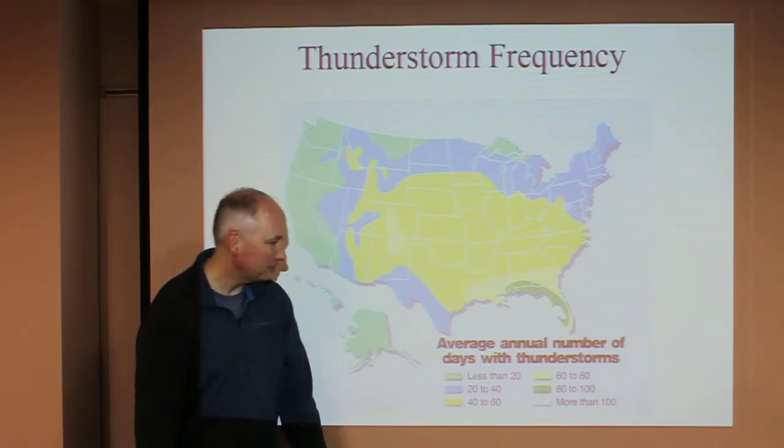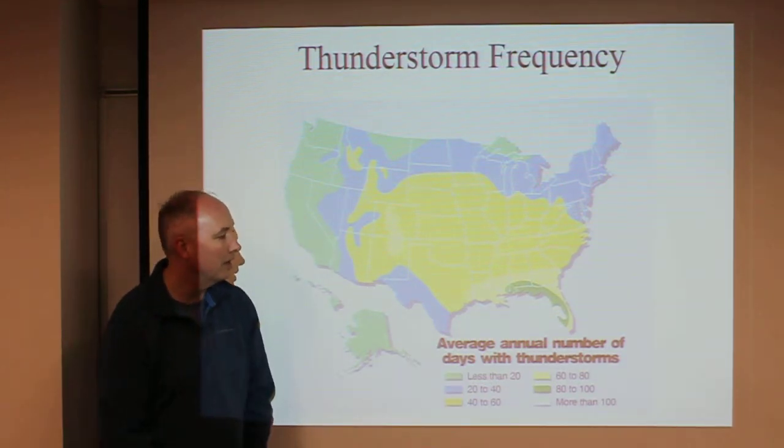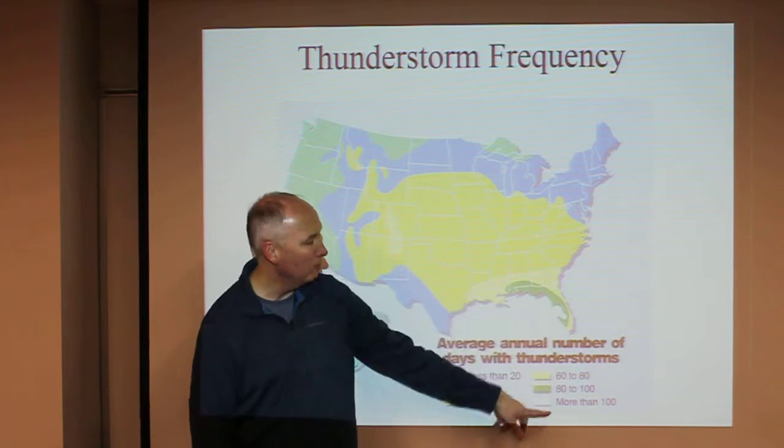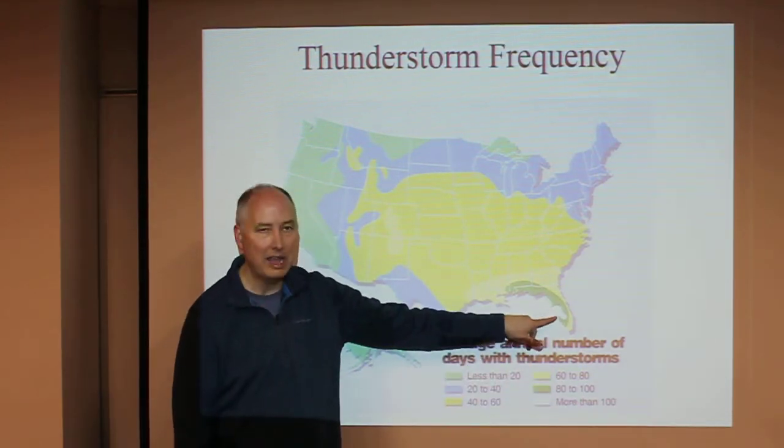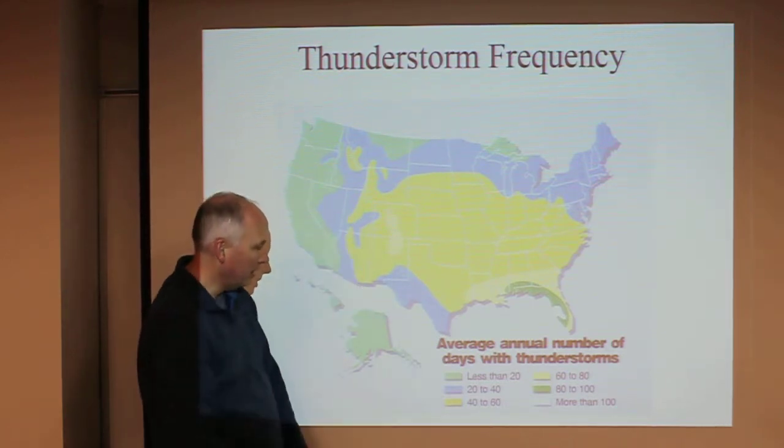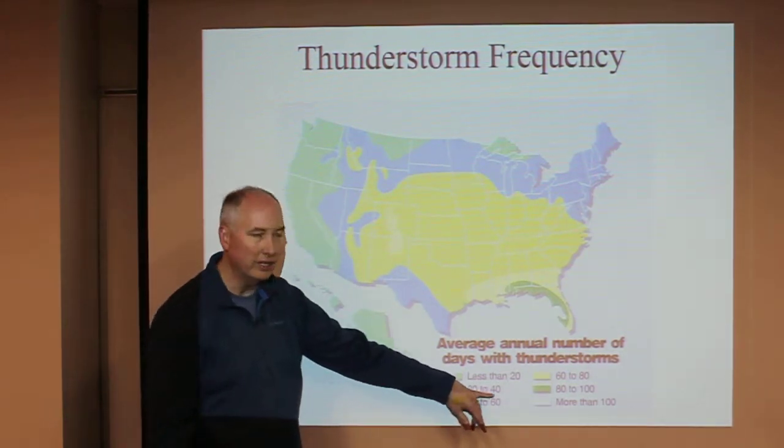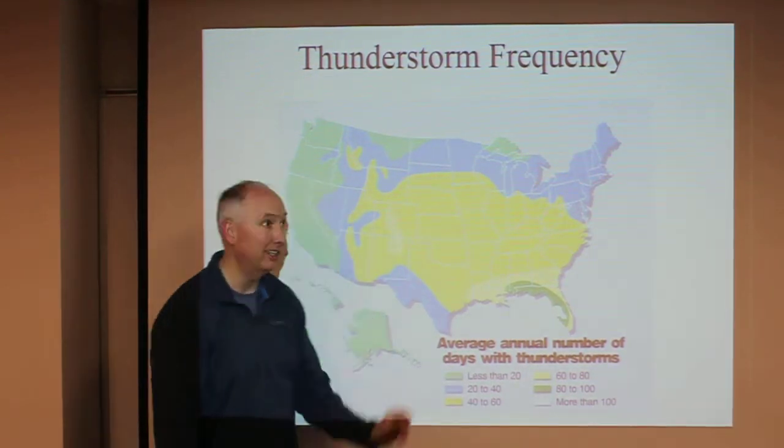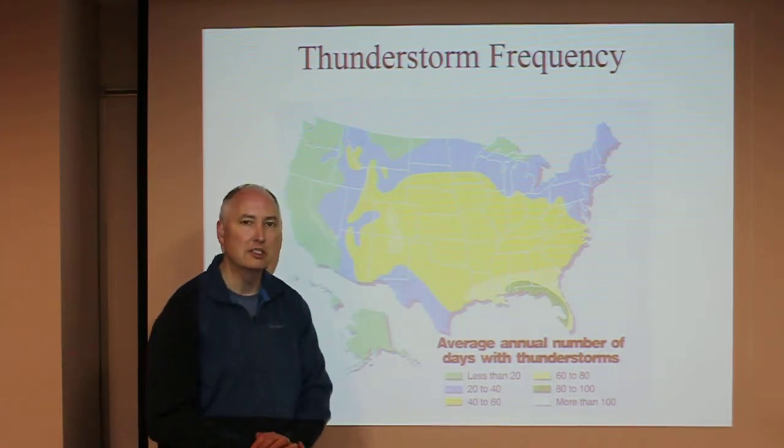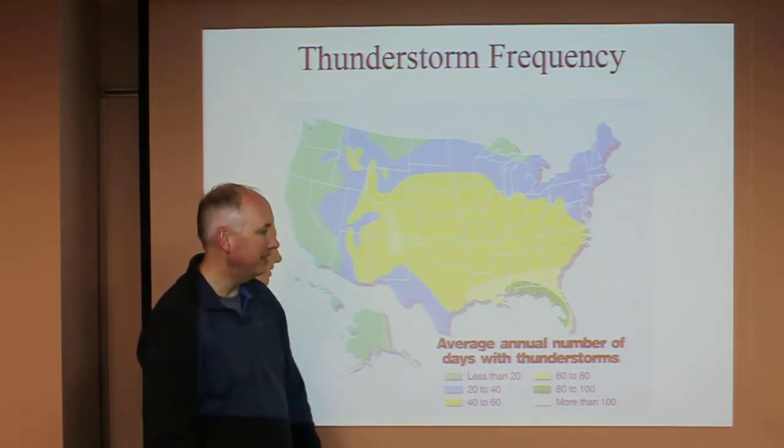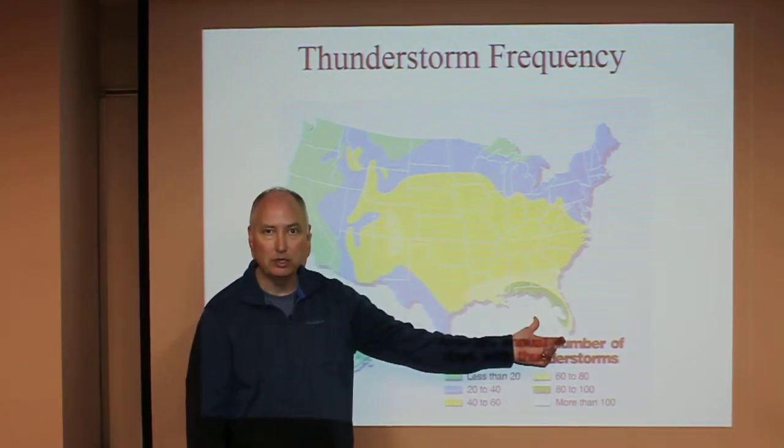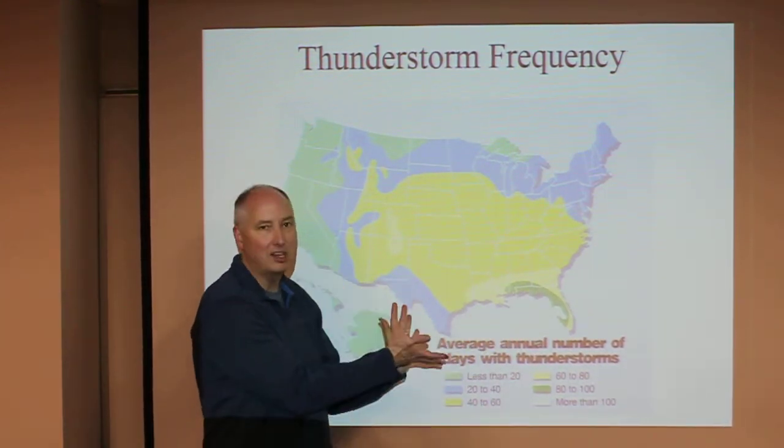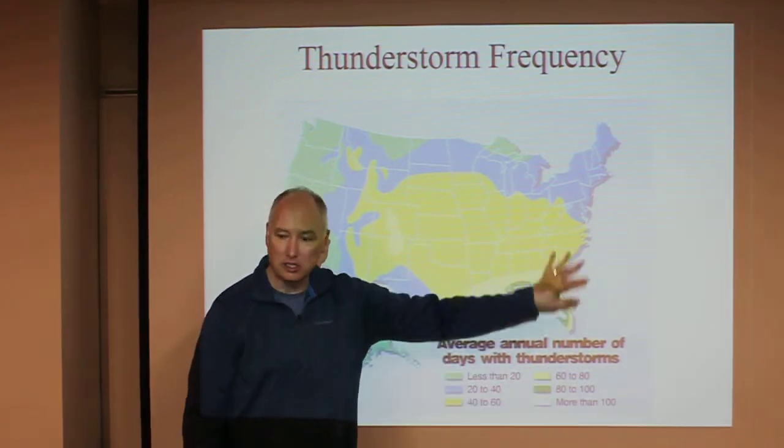Thunderstorm frequency—this is the average annual number of days with thunderstorms that occur. Down in Florida, they have more than 100 days out of the year with thunderstorms. Here in Utah, 20 to 40 days of the year can have thunderstorms. You move out to California, that's significantly less than 20. But the question is, is this climate or weather? Can I look out and see that the average number of thunderstorm days is 100? No. You have to do a statistical analysis of daily weather to determine this climate for thunderstorms, so this is an example of climate.